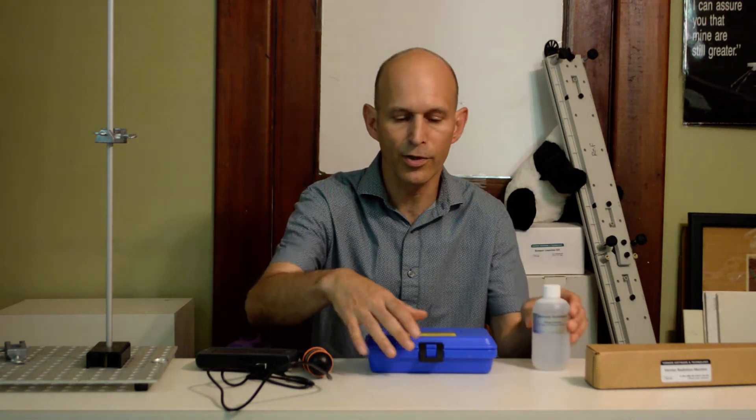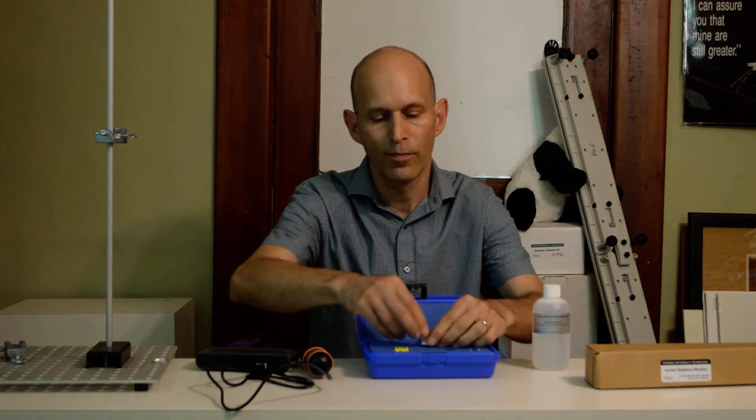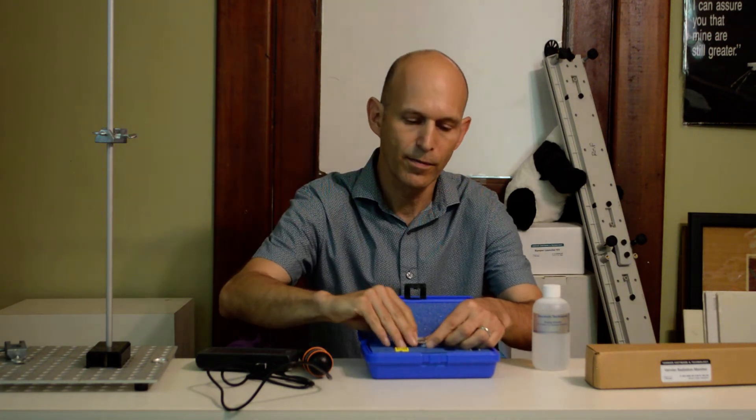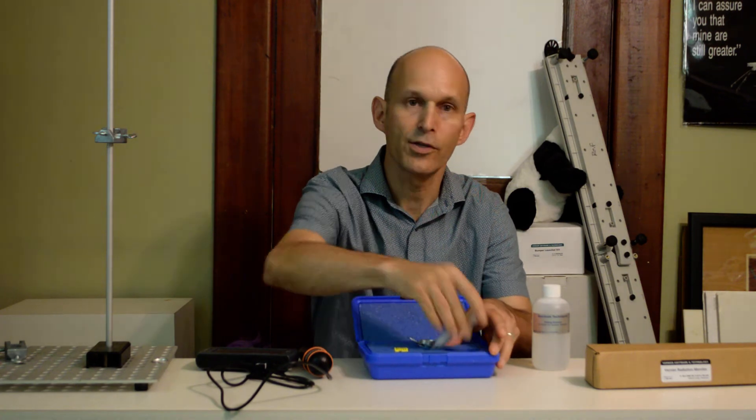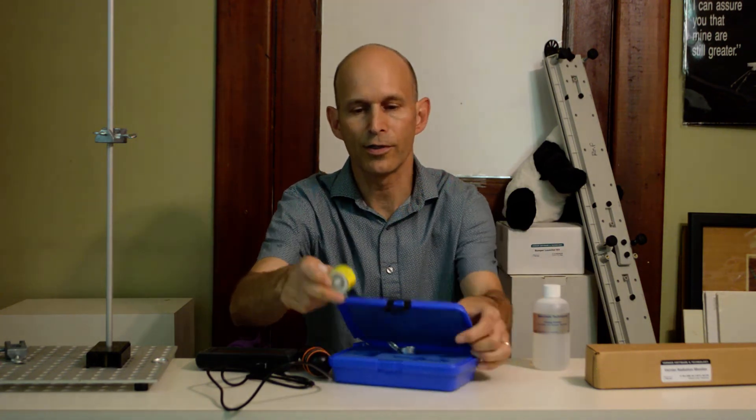What you get is this eluting solution in this little plastic box, which has a bunch of metal planchettes. They're little dishes that hold fluid, a syringe, and the isotope generator itself, which is this little plastic thing.